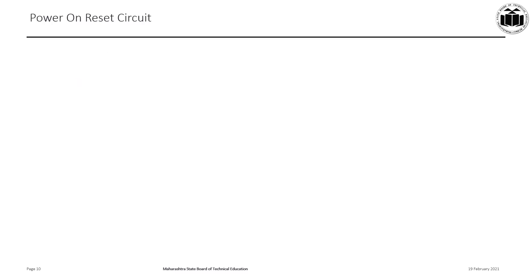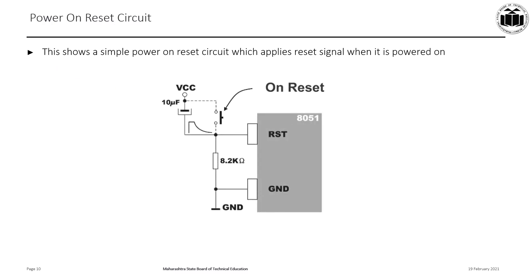The power-on reset circuit applies a reset signal when the microcontroller is powered on. Typically, the reset circuit comprises an 8.2 kΩ resistor and a 10 µF capacitor, which are sufficient to provide a delay to make the RST pin high for two machine cycles. For manual reset, a switch is provided as shown in the diagram. Upon power-on or key press, the RST pin goes high, and as the capacitor charges through resistor R, the RST signal goes low, generating an active high reset signal for a specific time decided by the values of R and C.